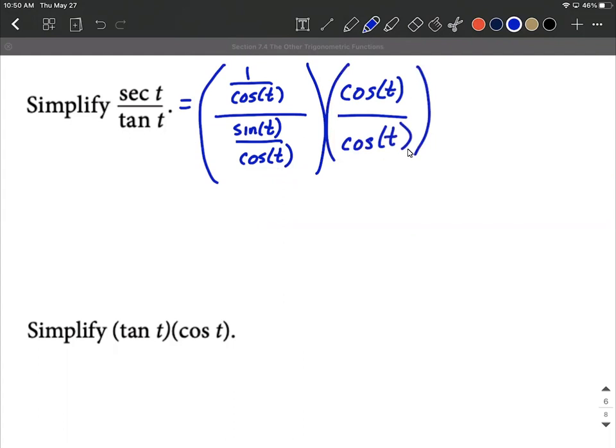The idea here is we're multiplying by cosine of t and dividing by cosine of t. Those basically create a one. So we have a one in our numerator, and these get to cancel out or simplify down—cosine of t multiplying by it and dividing by it. Those will also simplify down to make a one.